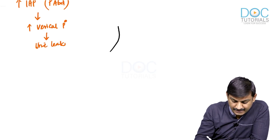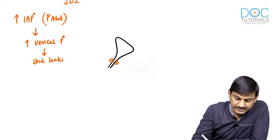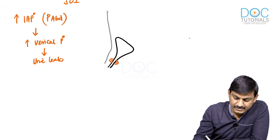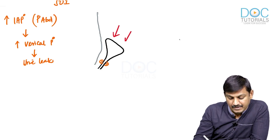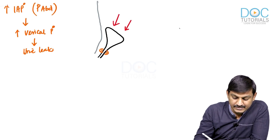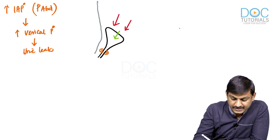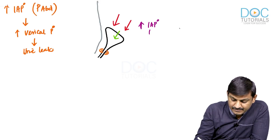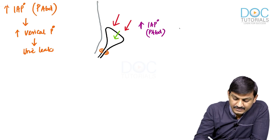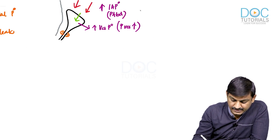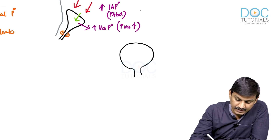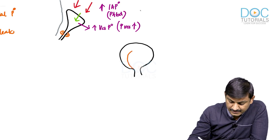I will explain here. This is our bladder — the female bladder — and this is the sphincter we are talking about. This is our anterior abdominal wall. Whenever the patient is straining, there is an increase in the intra-abdominal pressure, and since the bladder is also in the intra-abdominal region, the pressure is transmitted to the bladder and the vesical pressure also increases. The bladder is a hollow viscous organ and it has its own thick muscle layer.